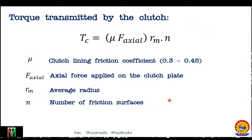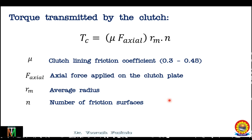Finally, the torque transmitted by the clutch at steady state is given by: Tc = μ × Fxl × Rm × N, where μ is the clutch lining friction coefficient (generally 0.3 to 0.45 for organic friction lining), Fxl is the axial force applied on the clutch plate, Rm is the average radius on which the axial force is applied, and N is the number of friction surfaces. For a single clutch plate, the number of surfaces is 2, and likewise for multi-plate clutches.